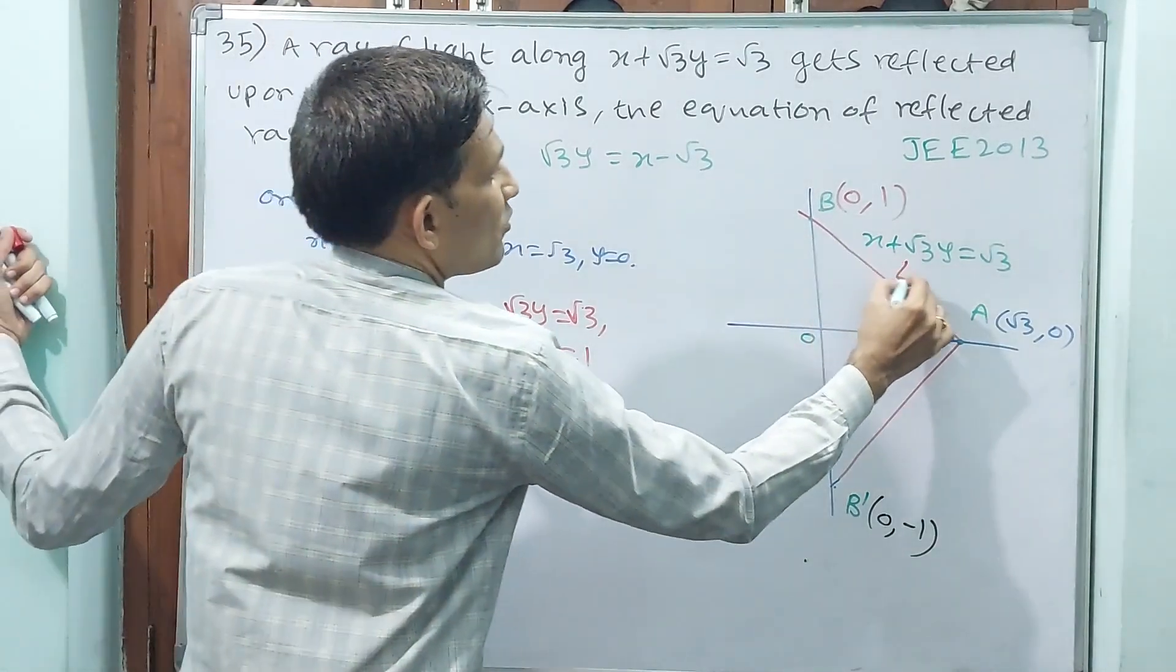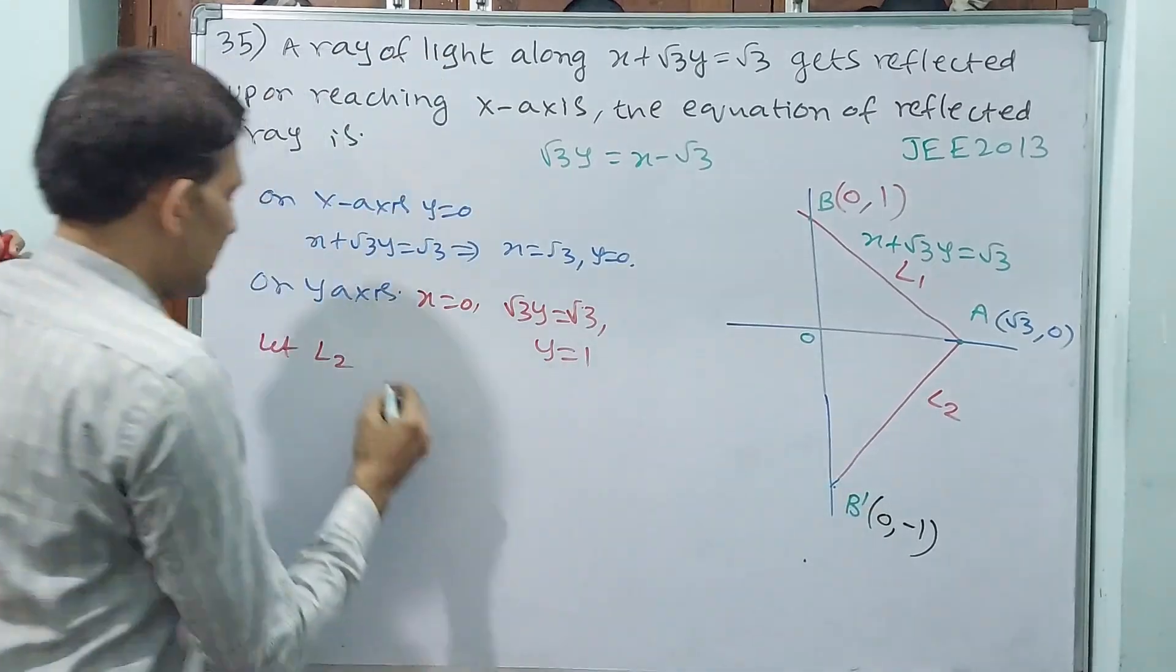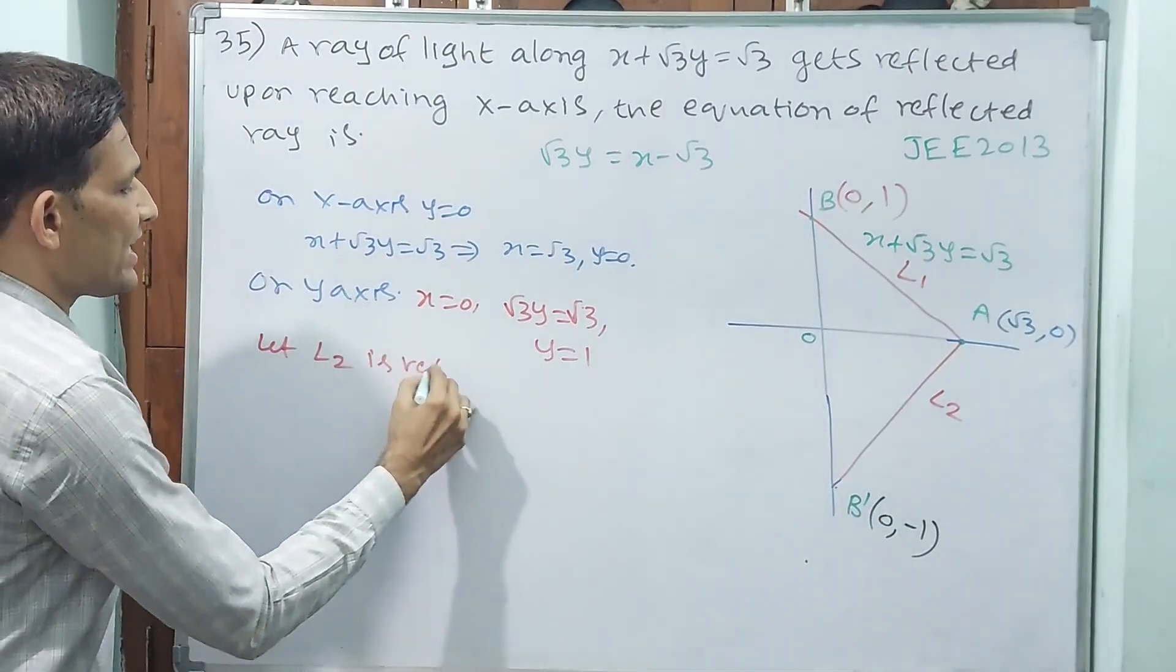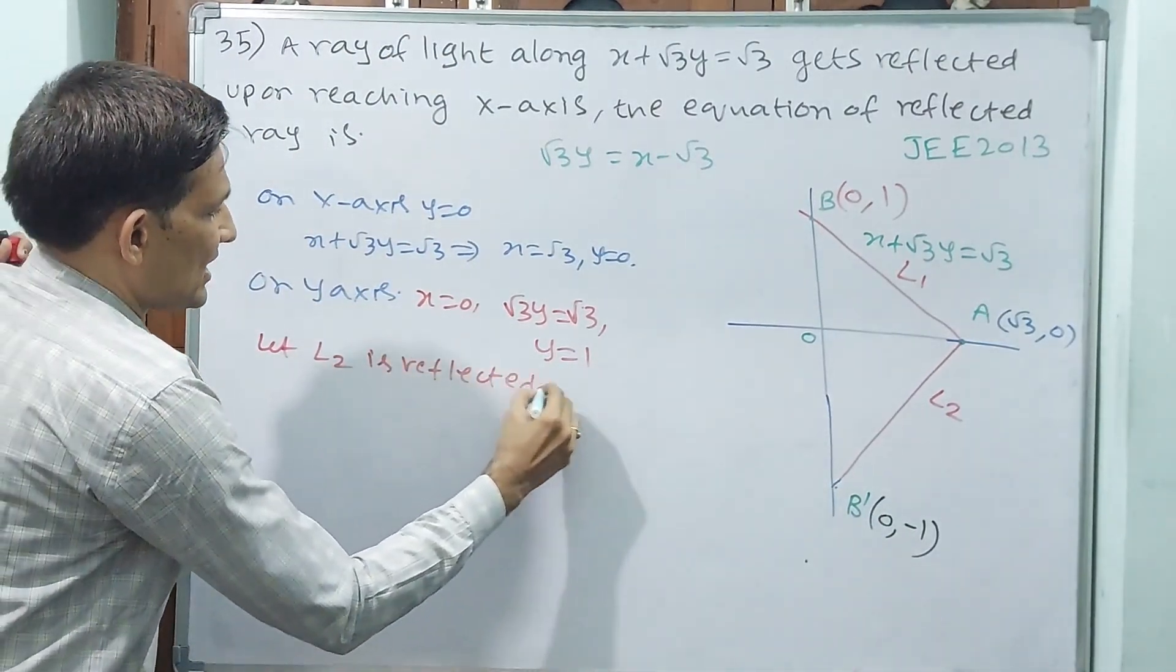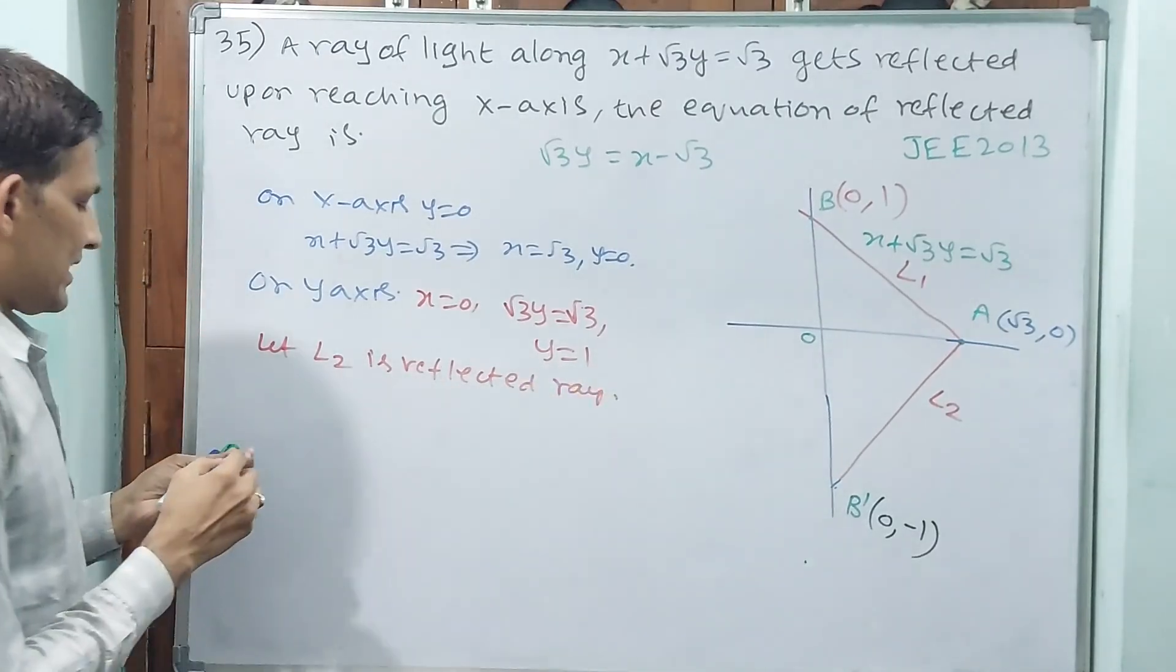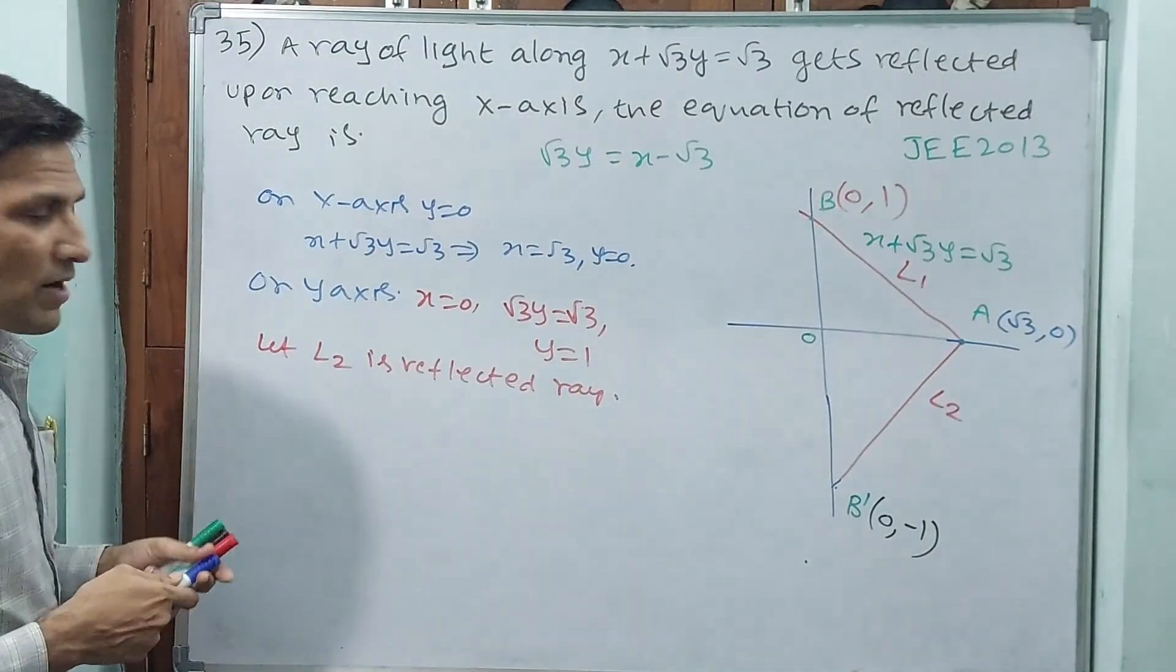Letter L2. This you take as L1, this you take as L2. L2 is the reflected ray. Slope of L2...